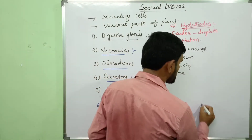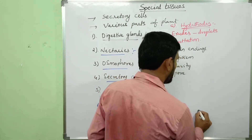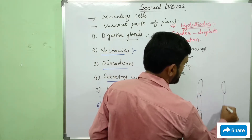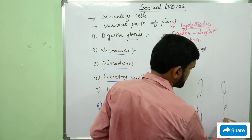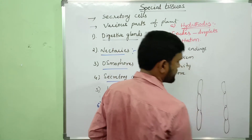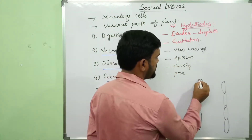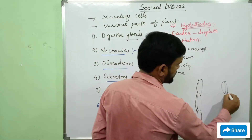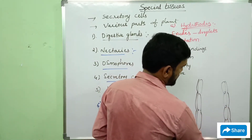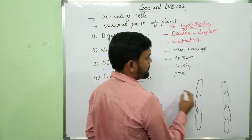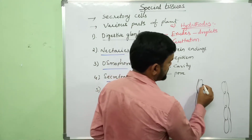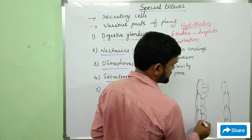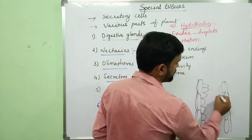This is the internal structure of a leaf or grass. This is the epidermis. Over the epidermis there is a cuticle. Inner to the epidermis there is mesophyll tissue.